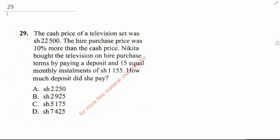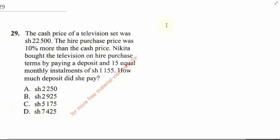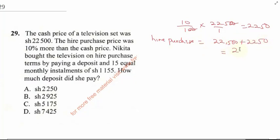The hire purchase price was 10% more than the cash price, so let's get 10%. That would be 10/100 times 22,500, which gives us 2,250. So the hire purchase price will be 22,500 plus 2,250, which gives us 24,750.